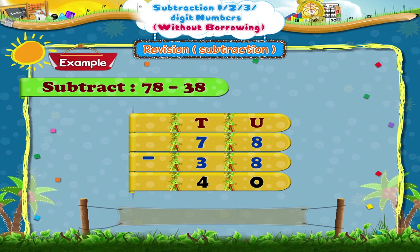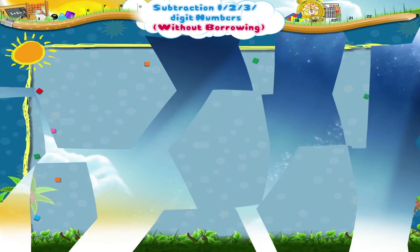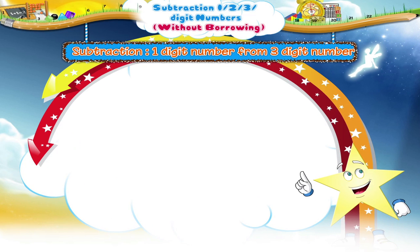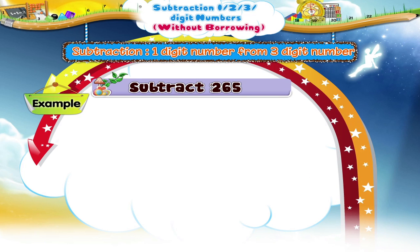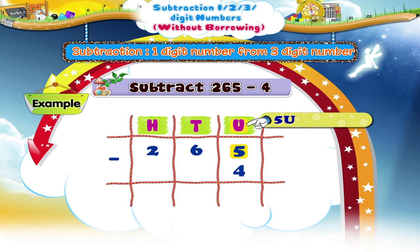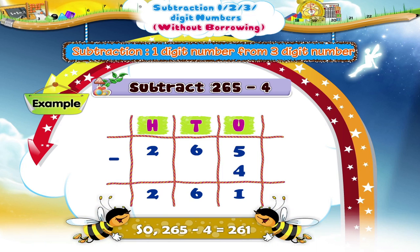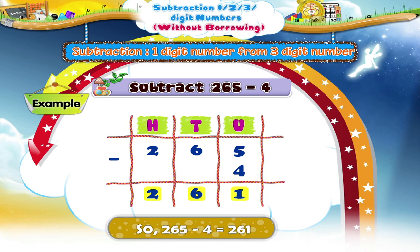Very good, Starry! 5 minus 4. Here, 5 units minus 4 units equals 1 unit. Write 1 in the units place of the difference. Now, write 6 in the tens place and 2 in the hundreds place. So the difference is 261.